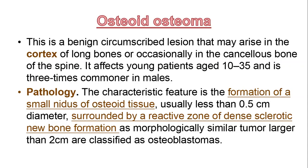The pathology of the tumour — the characteristic feature is the formation of a small nidus of osteoid tissue, usually less than 0.5 centimetres in diameter, surrounded by a reactive zone of dense sclerotic bone formation. This morphology is similar to the tumour that is larger than 2 centimetres, which is classified as osteoblastoma.